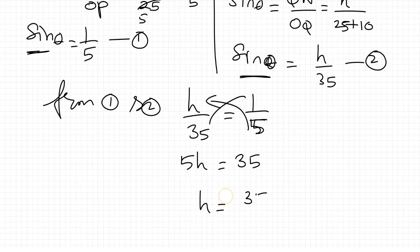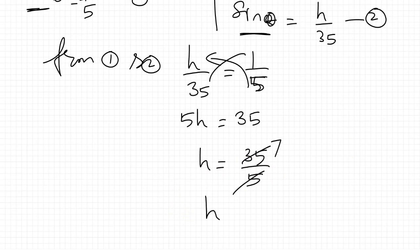h equal to 35 by 5. 7 fives are 35. So height of the kite h equal to 7 meters.